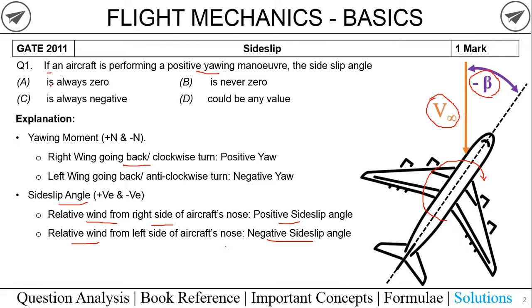Checking the options: option A says always zero — this is wrong as it is negative. Option B says the sideslip angle is never zero — also wrong as it doesn't specifically say negative. Option C says always negative — yes, the sideslip angle is negative as the relative wind is from the left of the nose. Option D says it could be any value — not specific, so also wrong. Option C must be the right answer, and as per the answer key, option C is correct.